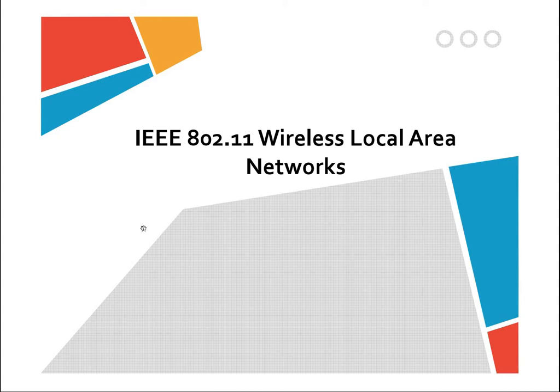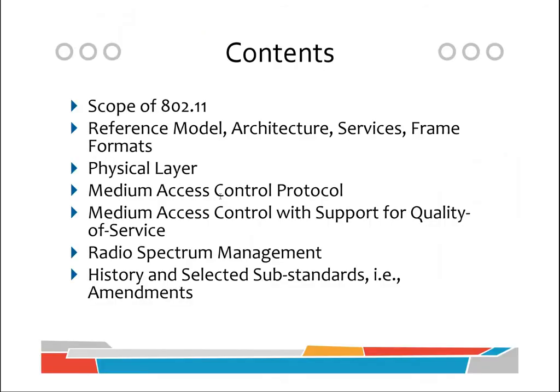Hello, Assalamu Alaikum everyone. This is the ninth lecture of the course, and this is the first part of wireless local area networks IEEE 802.11. The following slide contains about 90 pages, but we are not going to learn all of it — only the parts related to the network layer and data link layer. Any topic related to the physical network layer we are going to skip.